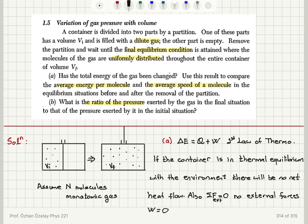To summarize: we discussed the variation of gas pressure with volume. We had a container where the gas occupied an initial volume V_i, then we removed the partition and let the gas expand to fill the full volume V_final. I assumed capital N molecules and a monatomic gas for simplicity, so the energy consists only of translational kinetic energy of the center of mass. For a diatomic or larger molecule, vibrational and rotational kinetic energy would also come into play.